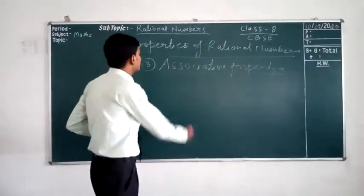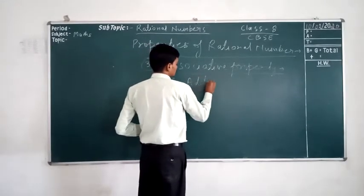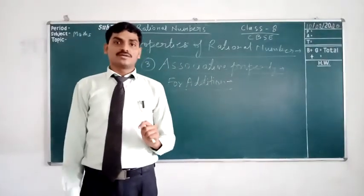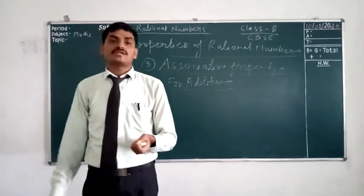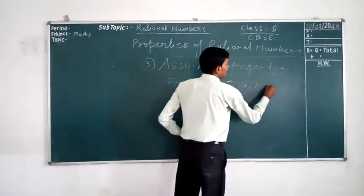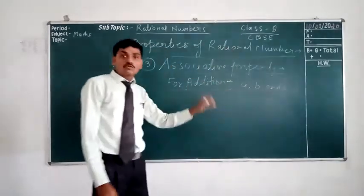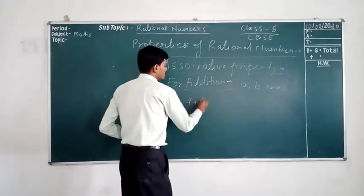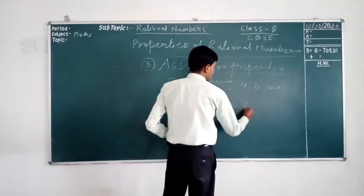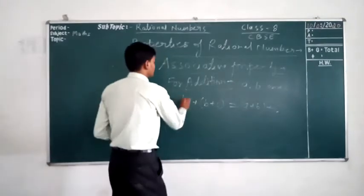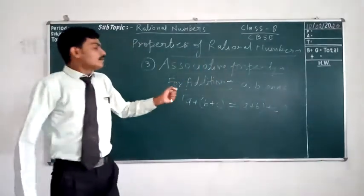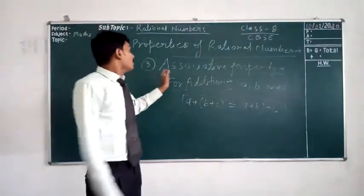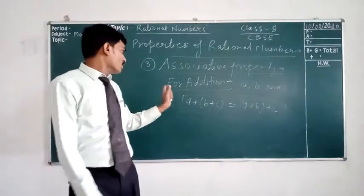What is the associative property for addition? Here we will take minimum 3 rational numbers: A, B, and C. So after grouping, we get the same answer. That is, (A + B) + C is equal to A + (B + C). For addition, grouping does not matter. That is, rational numbers are associative for addition.